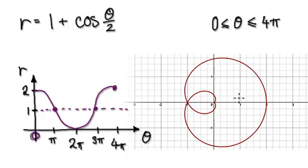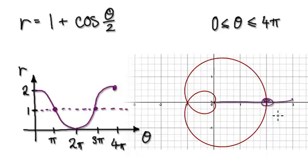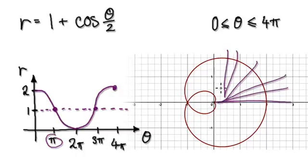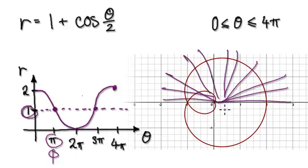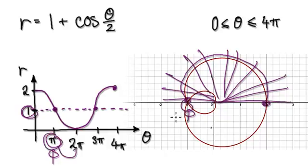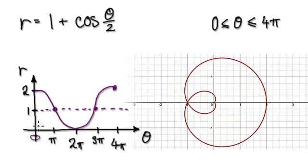When the angle is zero, the radius will be two — so this here is two. And then by the time the angle gets to pi, the radius will be one. So by the time it gets to pi, the radius is indeed one.